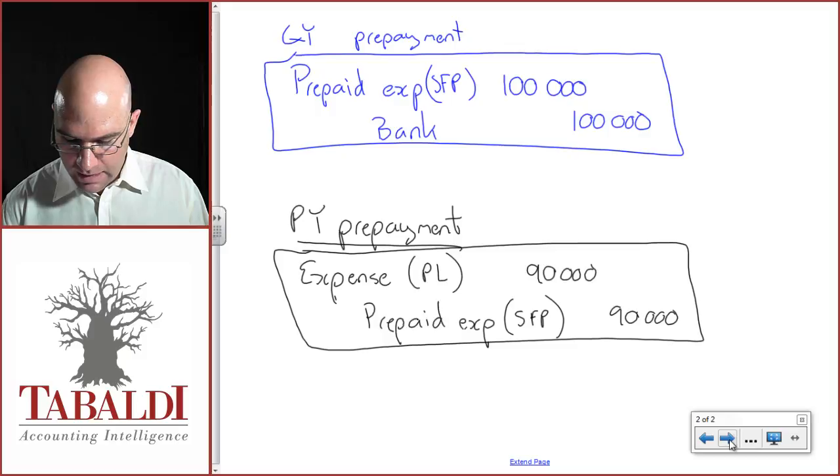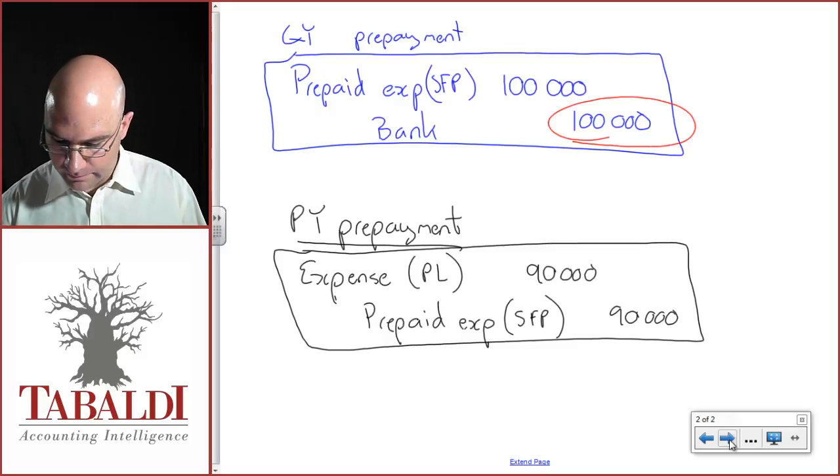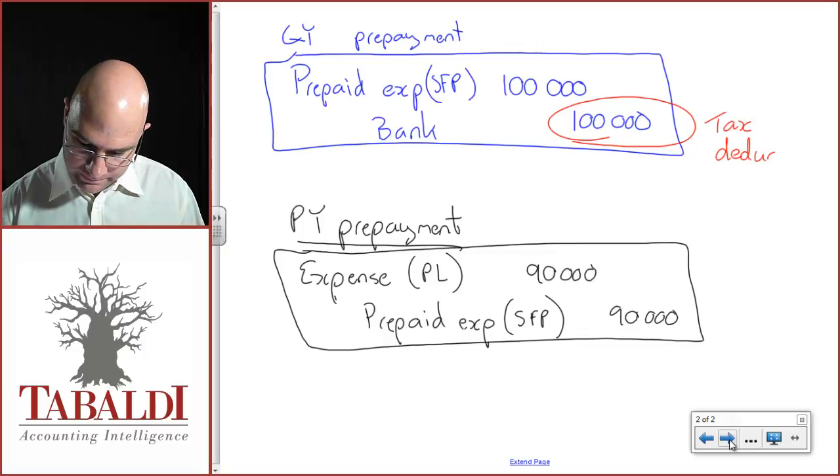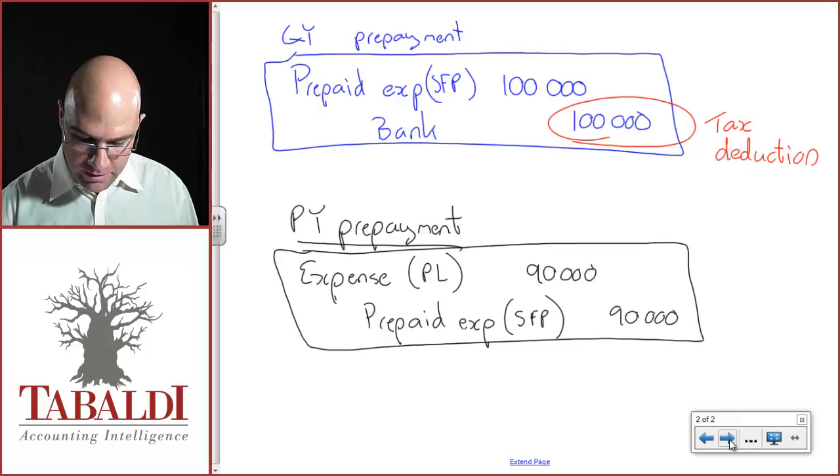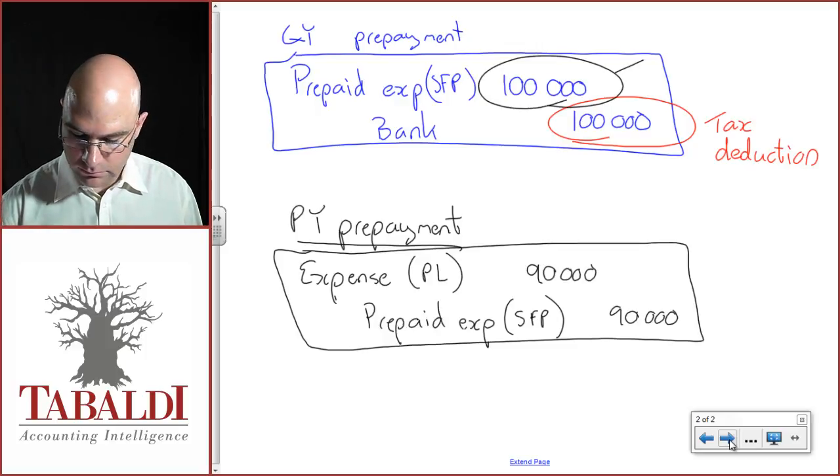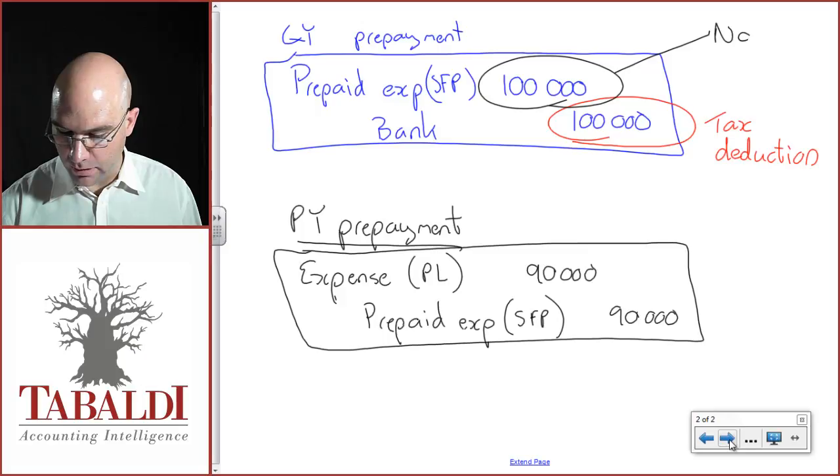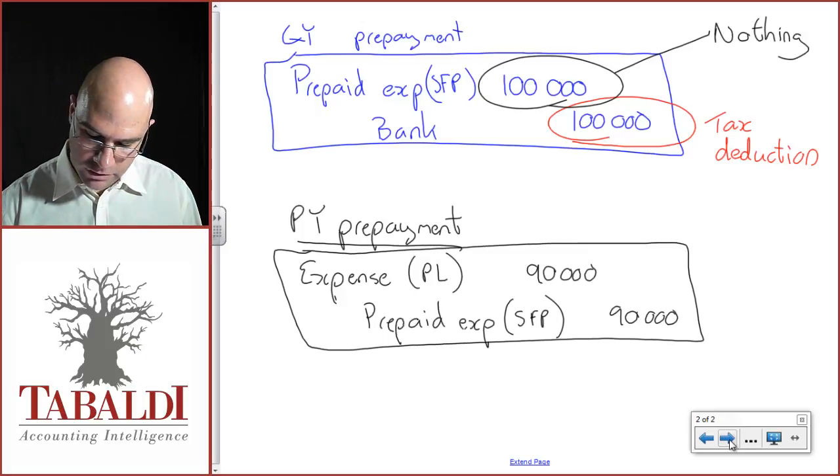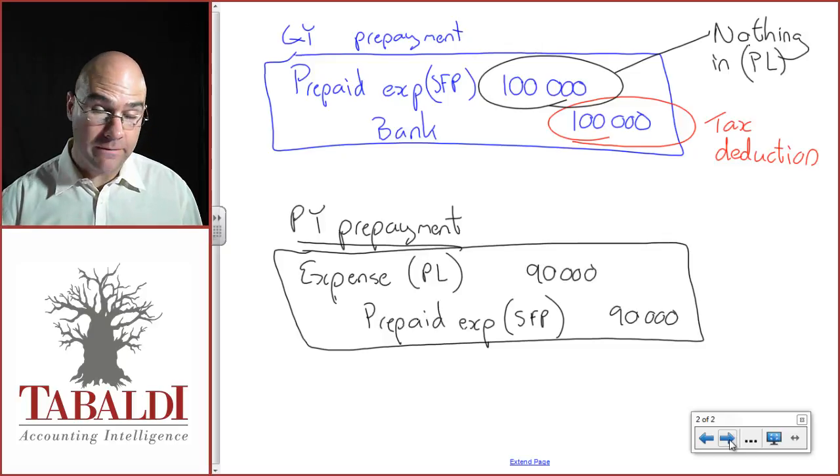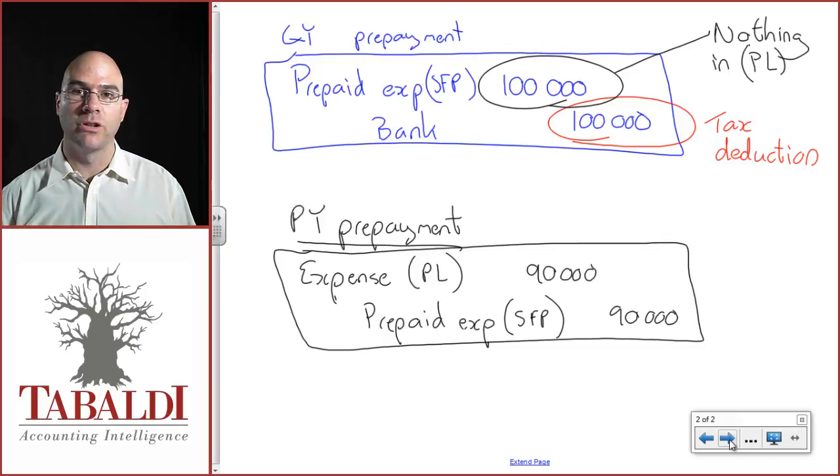Over here, you will get the deduction of a hundred thousand when you make the payment of a hundred thousand, even though at that point there has been nothing going through profit and loss. So nothing in profit and loss.